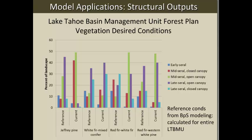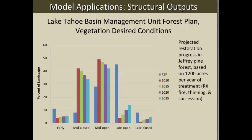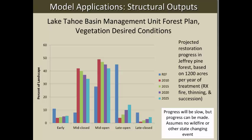We then did modeling using the Forest Vegetation Simulator and Region 5's Spectrum software — a spatial model using FVS data. For the Jeffrey Pine type specifically, with the reference condition on the left representing modeled pre-Euro-American conditions, and assuming the basin could carry out about 1,200 acres per year of different treatments, we modeled progress toward replicating those landscape conditions. This kind of work has been done on a number of forests in the western U.S. The outcome showed that progress would be slow but achievable, though this did not assume any wildfire or other state-changing events.